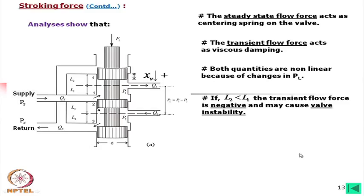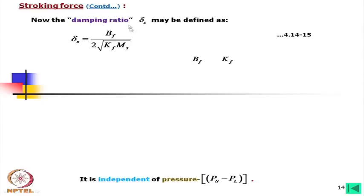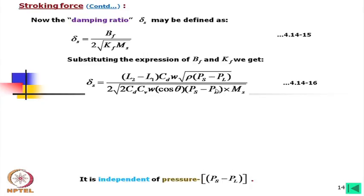A compromise is needed: usually L2 is taken slightly greater than L1. In design, it is maintained that L2 is either equal to or greater than L1. In normal practice, L2 slightly greater than L1 is preferred for positive damping while maintaining control of the flow force.